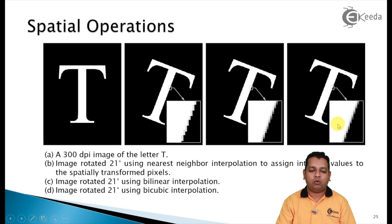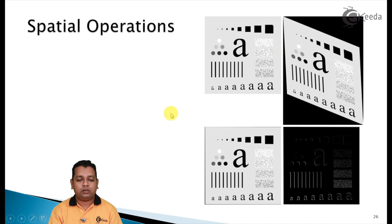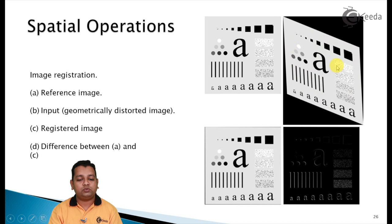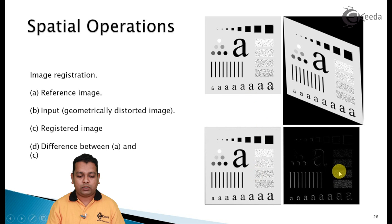Another example is image registration. The original or reference image is shown, followed by the input geometrically distorted image that needs to be registered. After having registration, the output is obtained. The differences between the reference image and the output of image registration are shown in the last part. These were the spatial operations.